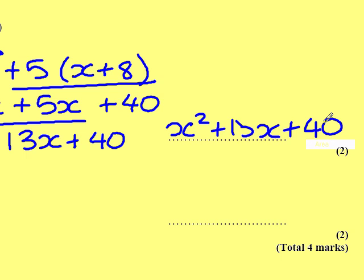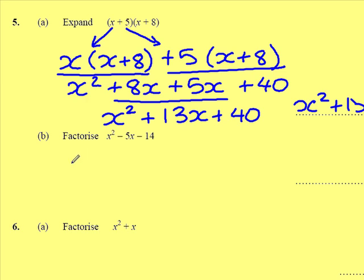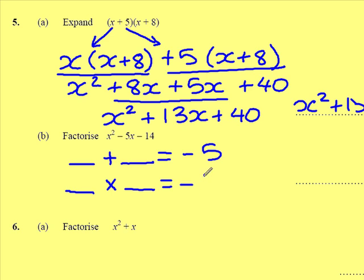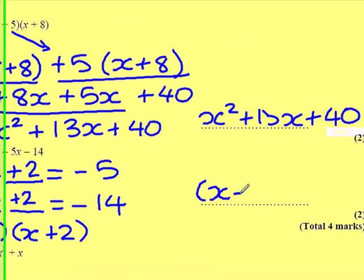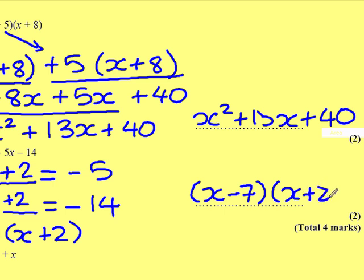Part B is factorise x squared minus 5x minus 14. I need to find two numbers that, when added, give me minus 5, and when multiplied, give me minus 14. The only two numbers that will do that are minus 7 and plus 2. So, in factorised form, I've got two brackets with an x in both, and the numbers minus 7 and plus 2 — giving x minus 7 multiplied by x plus 2.